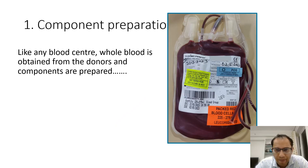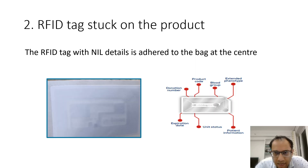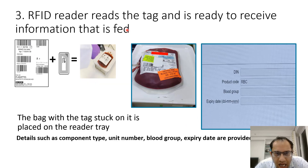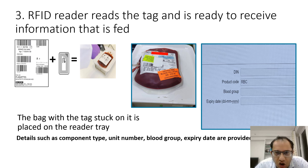This is how we did it: in any blood center, whole blood is obtained from the donor, components are prepared, and that is where we attached the RFID tag to the blood bag. This tag is stuck on the product with unit details. The RFID reader reads the tag and is ready to receive information — product code, blood group, expiry date. The bag with the tag is placed on the reader tray, and details such as component type, unit number, blood group, and expiry date are provided, creating the unique identification of the blood bag.